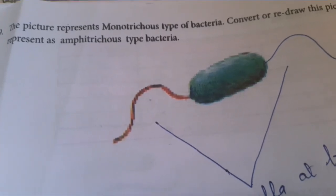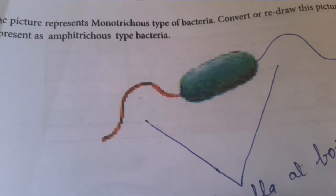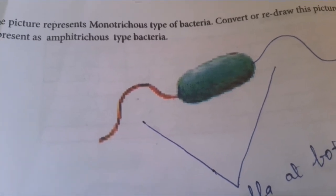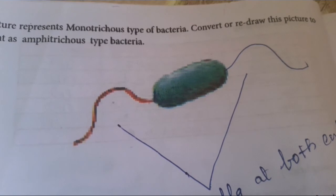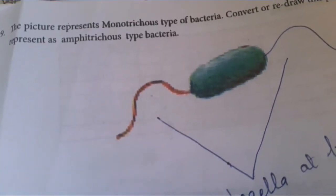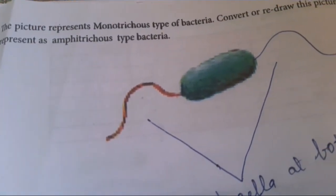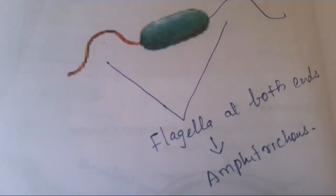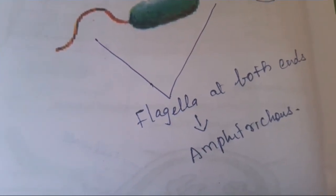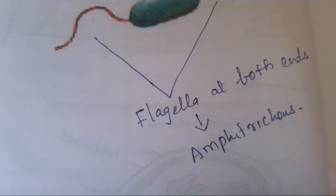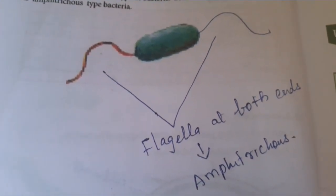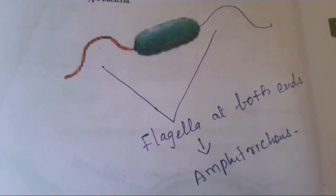Question nine. The picture represents a monotrichous type of bacteria, which has a single flagellum. Redraw the picture to represent an amphitrichous type of bacteria. Amphitrichous means it has flagella at both ends. The amphitrichous diagram is given. Thank you.